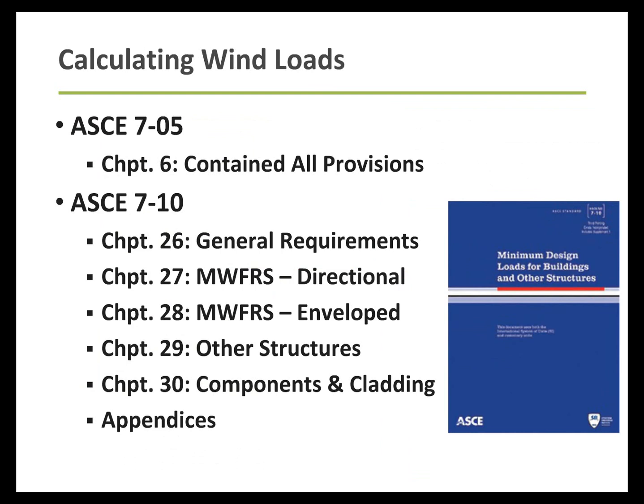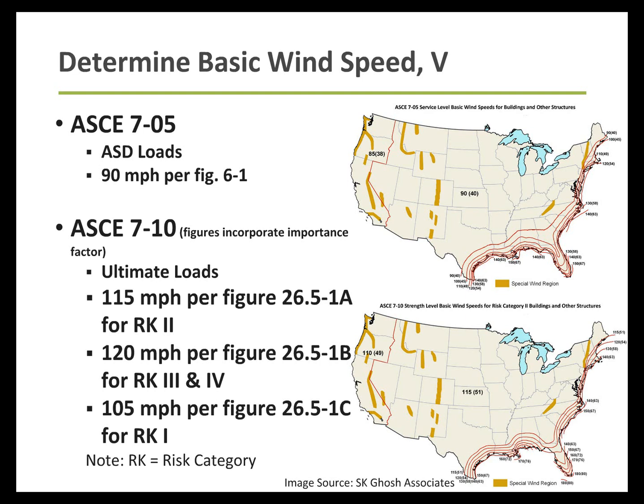If you've worked with ASCE 7-05 in the past, you're probably familiar with how everything was contained in Chapter 6 of that document for calculating wind loads. ASCE 7-10 looks significantly different — it's been broken out into five chapters, there's a sixth chapter on wind tunnel testing, and there's also an appendix. It's a complete reformatting of the wind load calculations section. The other significant change from 7-05 to 7-10 is that we've gone from an ASD level wind load calculation to now an ultimate level.